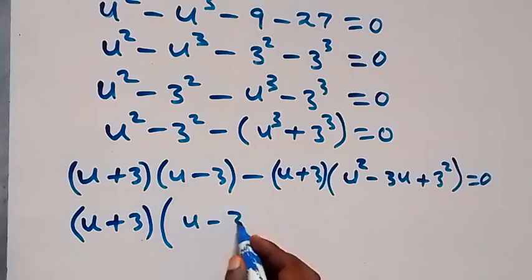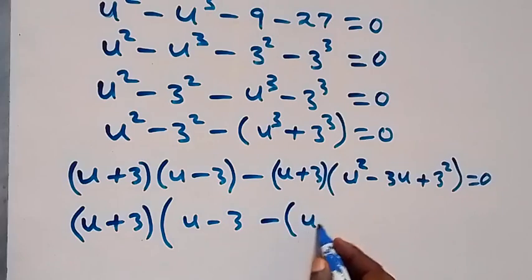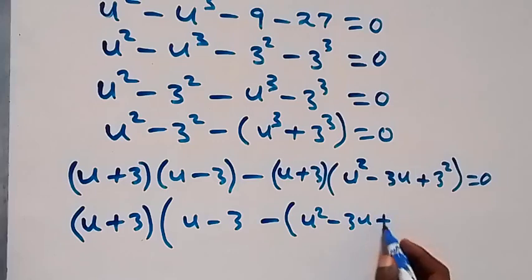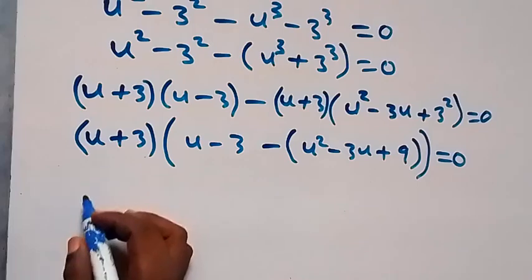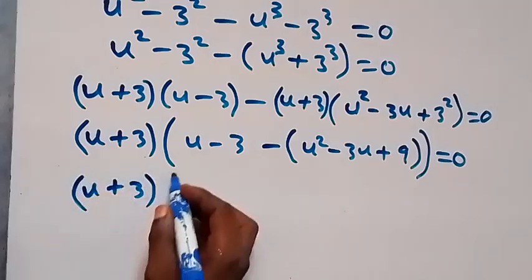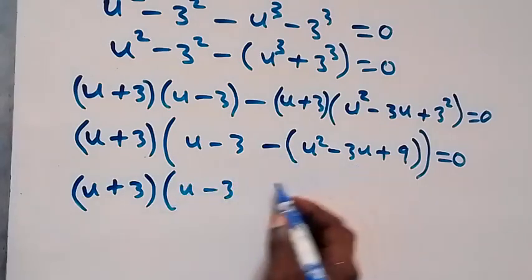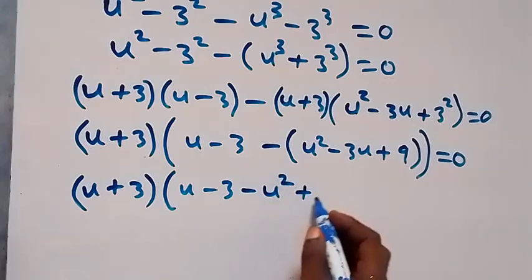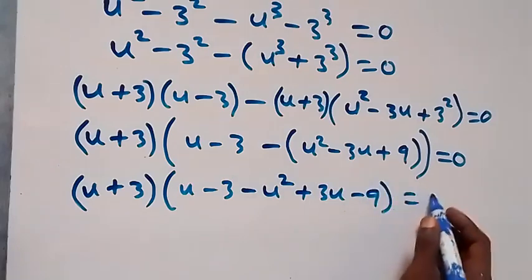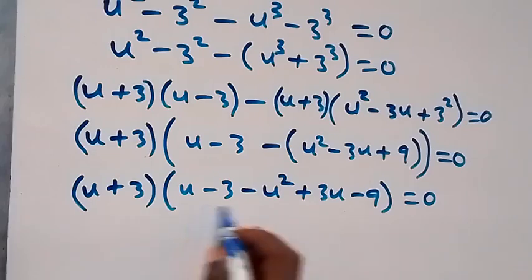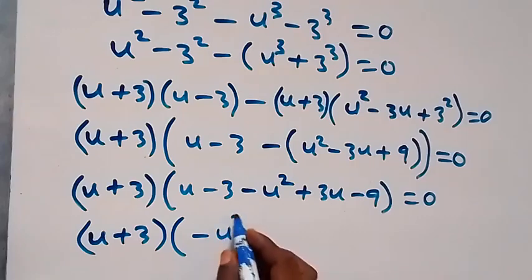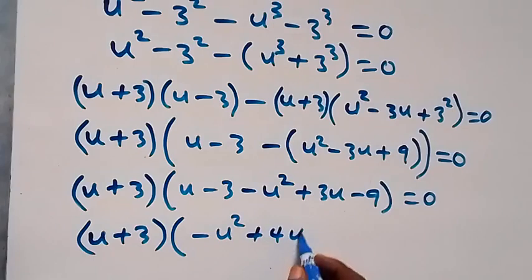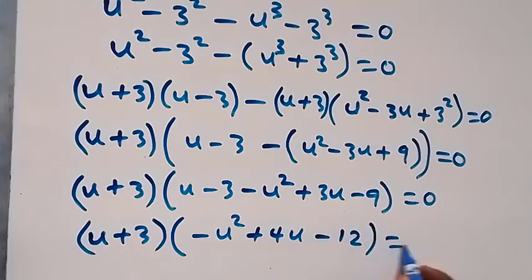After factoring out (u plus 3), the remaining bracket becomes: (u minus 3) minus (u squared minus 3u plus 9) equals zero. Expanding and rearranging inside the bracket gives minus u squared plus 3u minus 9, so combining: (u plus 3)(minus u squared plus 4u minus 12) equals zero.